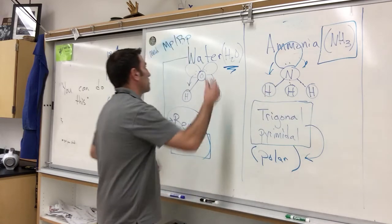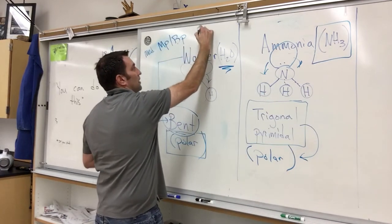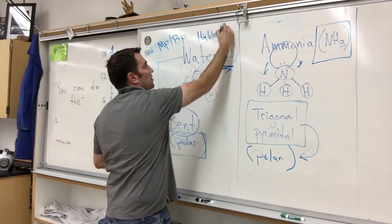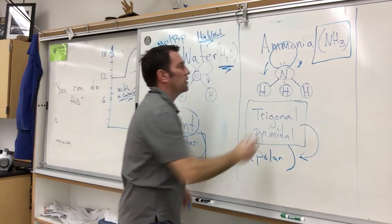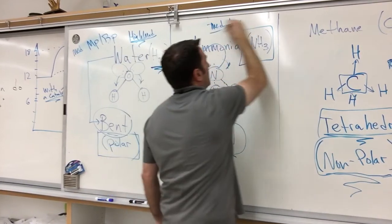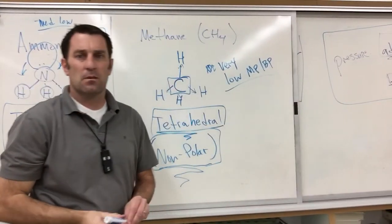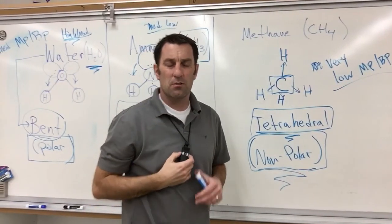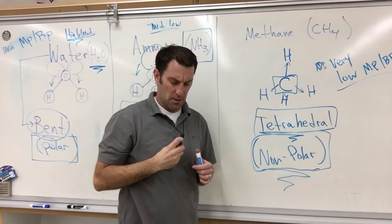So we have what we're going to consider in this case a high to medium for water melting and boiling point, a medium low, and a very low. So that should help you with shapes and tying to their properties.